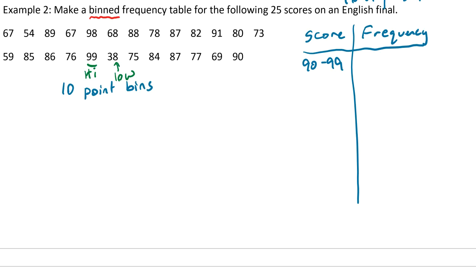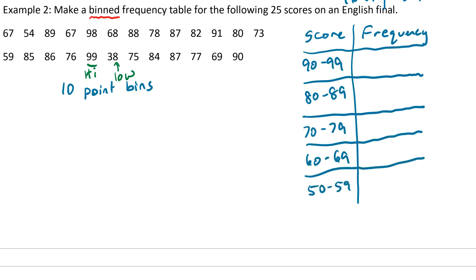So that's our first bin. Then next up it will be 80 to 89, then 70 to 79, and you get the idea. And don't forget, we are going to want a total down here.